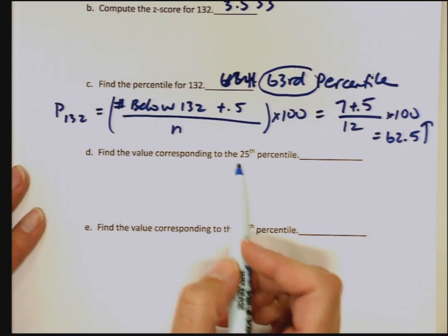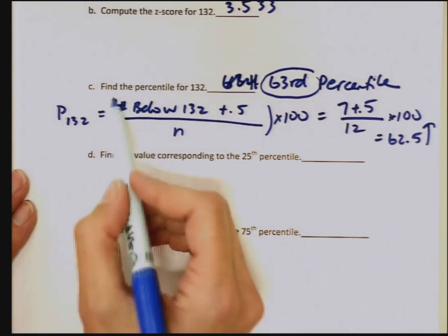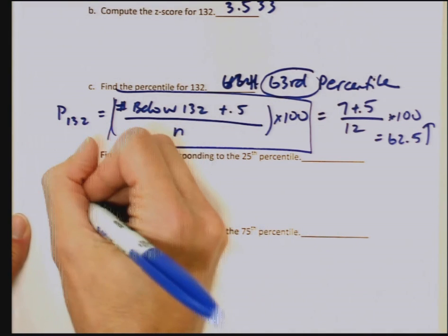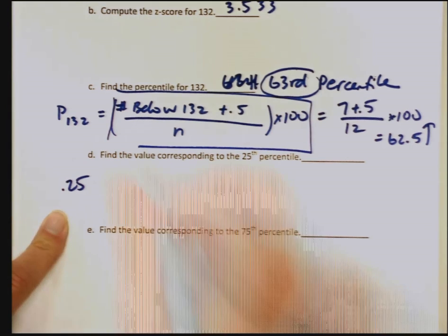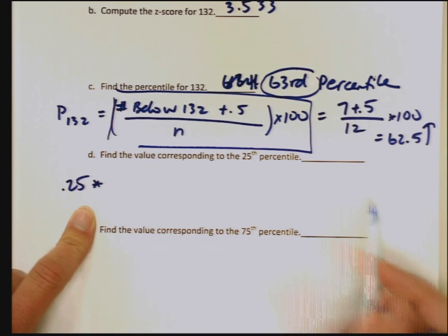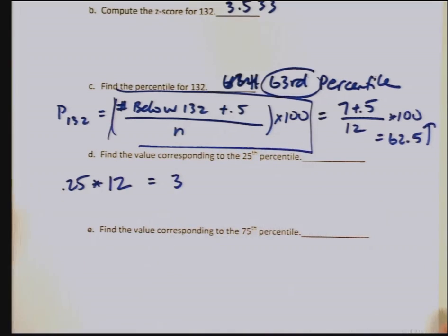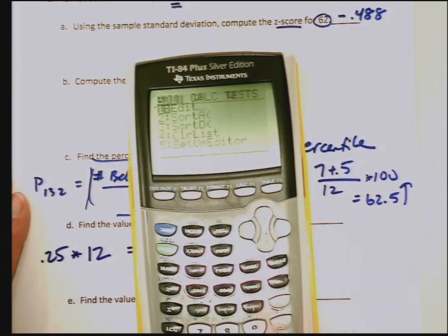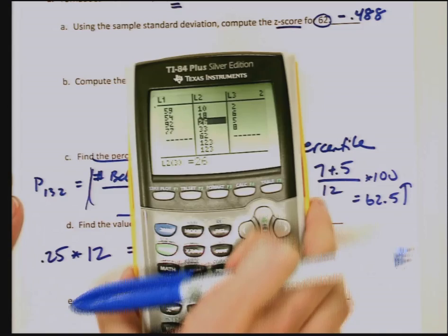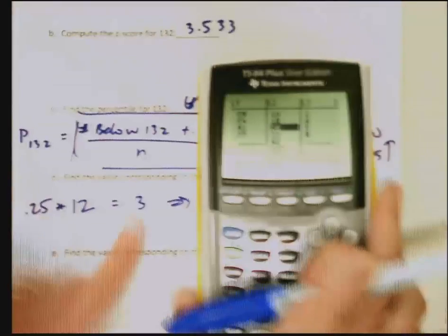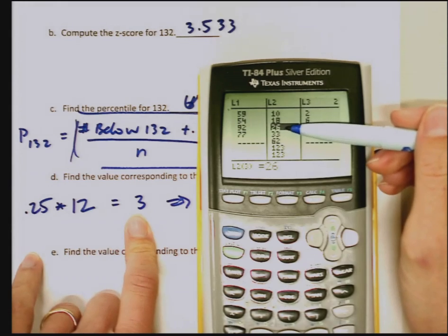D and E, we're going to look for a 25th percentile and a 75th percentile. So we know how to compute a percentile. If we want to figure out where the 25th percentile is, we're going to take 25%, which would be 0.25, times the number of scores that we have, and the number of scores that we had was 12. 0.25 times 12 is 3, and that's going to correspond to the 25th percentile. So I want to find the third highest score. I can go back to my list, edit, and that would be at 26.